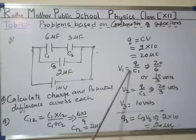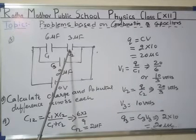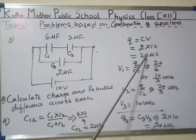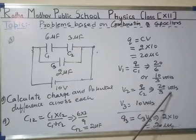Similarly, for the second one, v2 equals q/c2. Here q is again 20 microcoulomb and c is 3, so v2 is 20/3 volts. Obviously, the sum of 10/3 and 20/3 is always 10 volts.